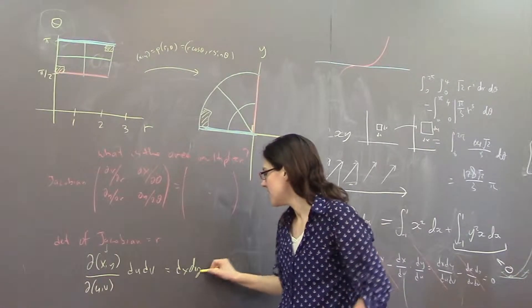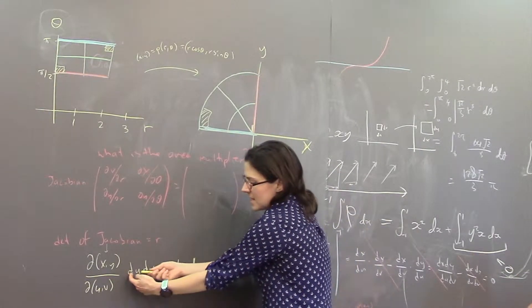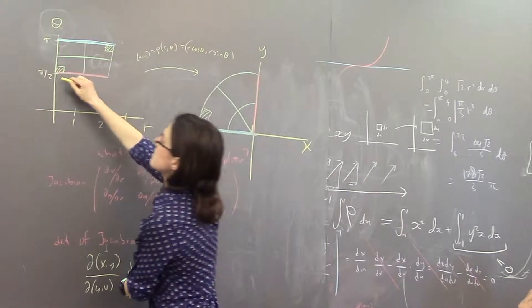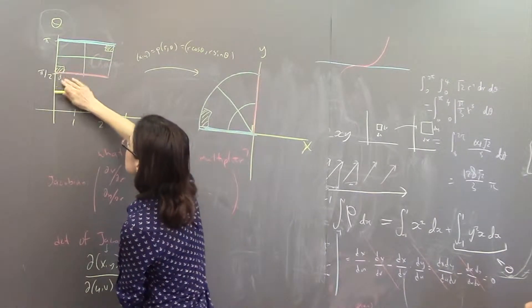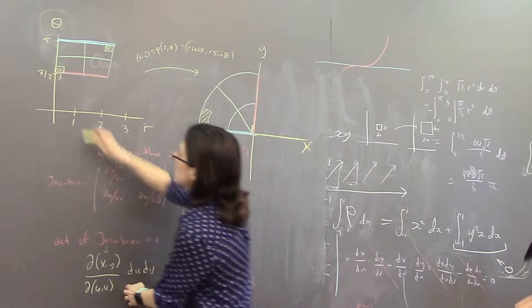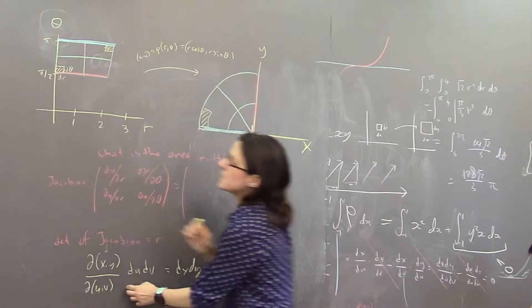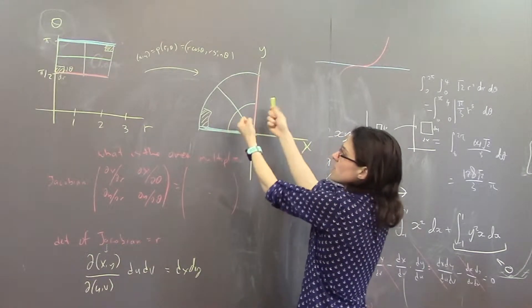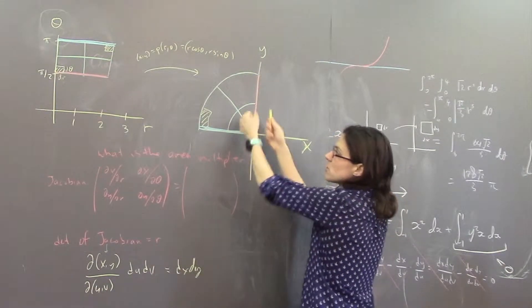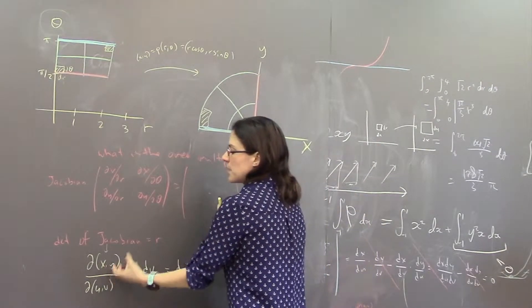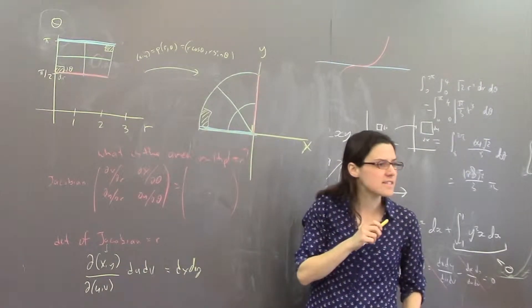The difference d of xy over d of uv, that's the determinant of the Jacobian times du dv will give you dx dy. So what this should make you think of is du dv, in this case dr and d theta, are the dimensions of a tiny rectangle over here. And then dx dy are the dimensions of the image shape, and you have to multiply by this expansion factor.